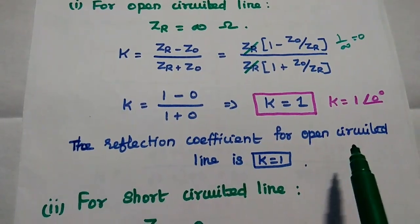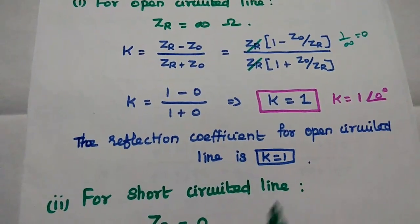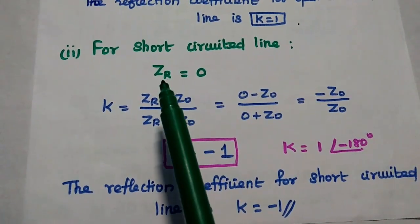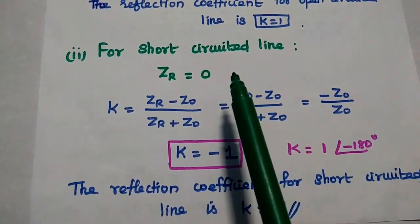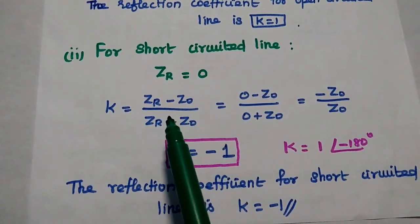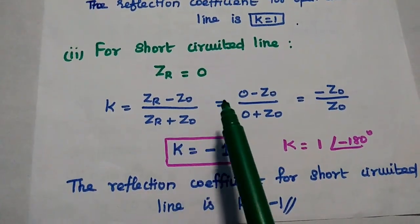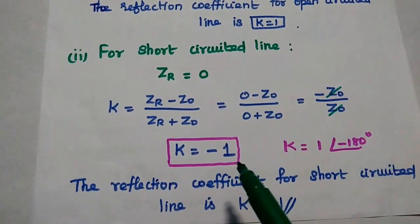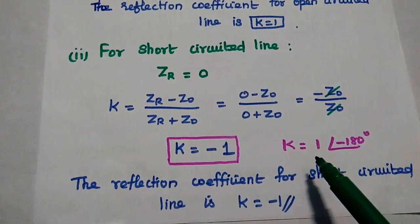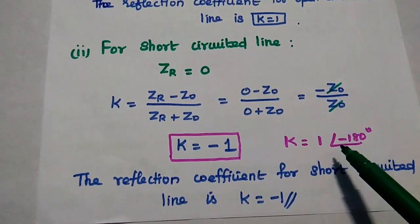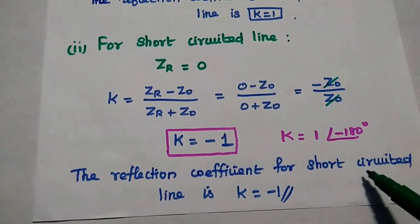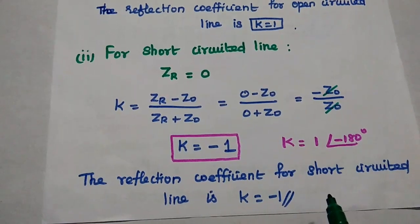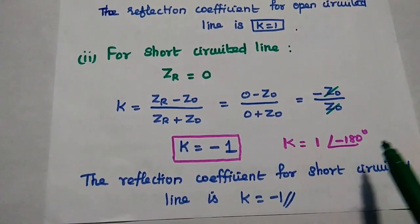The reflection coefficient for an open-circuited line is always 1. Next, we calculate the reflection coefficient for the short-circuited line. For a short-circuited line, ZR equals 0. We substitute directly: 0 minus Z0 divided by 0 plus Z0, which simplifies to minus 1. This means K has magnitude 1, and the minus sign represents 180 degrees out of phase. So the reflection coefficient for a short-circuited line is always minus 1, or in polar form, 1 with angle minus 180 degrees.